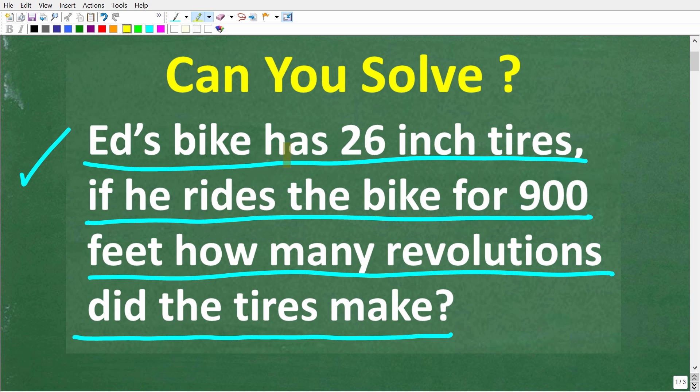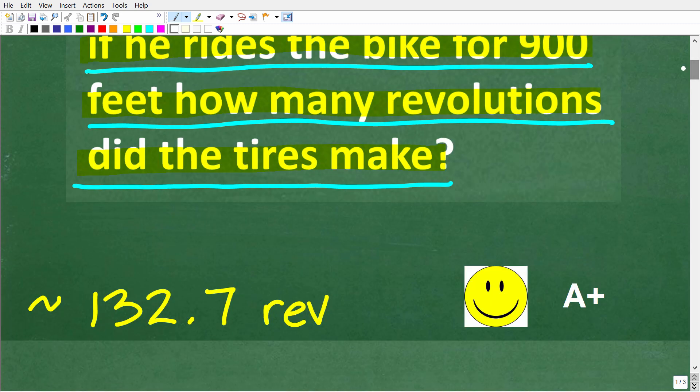Now let's take one more look at the problem before I show you the answer. Ed's bike has 26 inch tires. If he rides the bike for 900 feet, how many revolutions did the tires make? The correct answer is approximately 132.7 revolutions. If you got pretty close to this number,